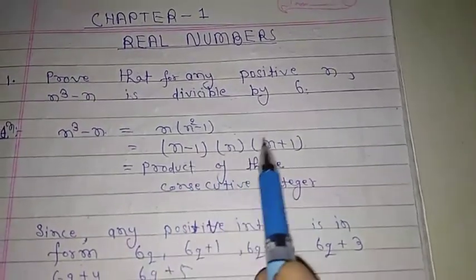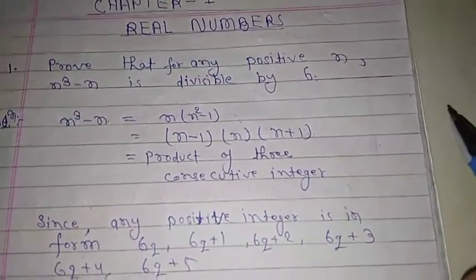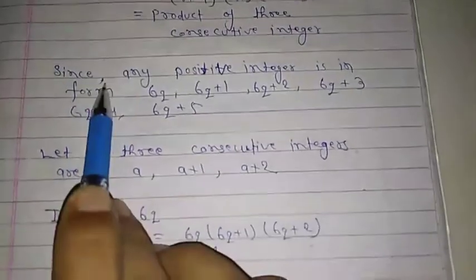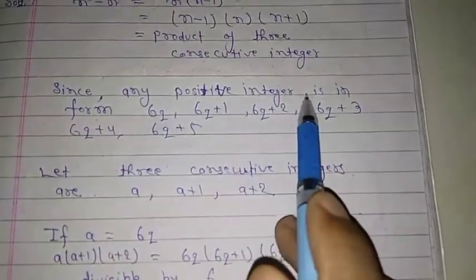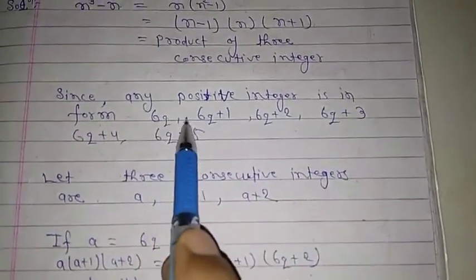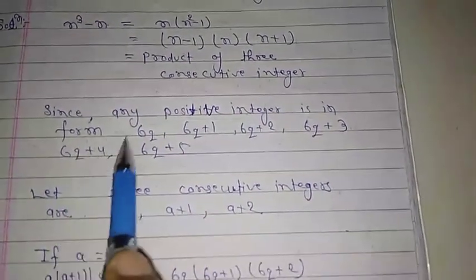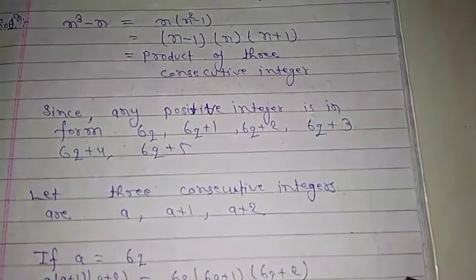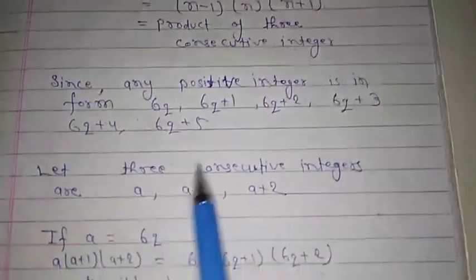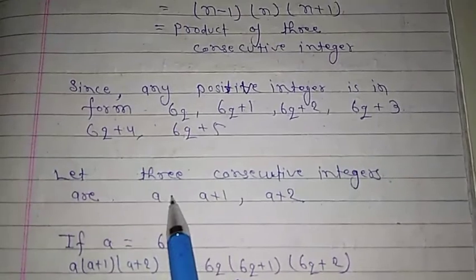Since any positive integer is in the form 6q, 6q+1, 6q+2, 6q+3, 6q+4, or 6q+5, let three consecutive integers be a, a+1, and a+2.